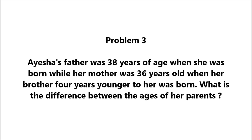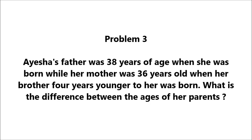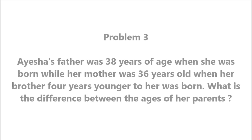For this problem you don't even need to write equations. When Aisha was born, her father was 38. Four years later, her brother was born — so the father's age at the brother's birth was 38 plus 4, which is 42. The mother's age at the brother's birth was 36. The difference between the parents' ages is 42 minus 36, which is 6 years.